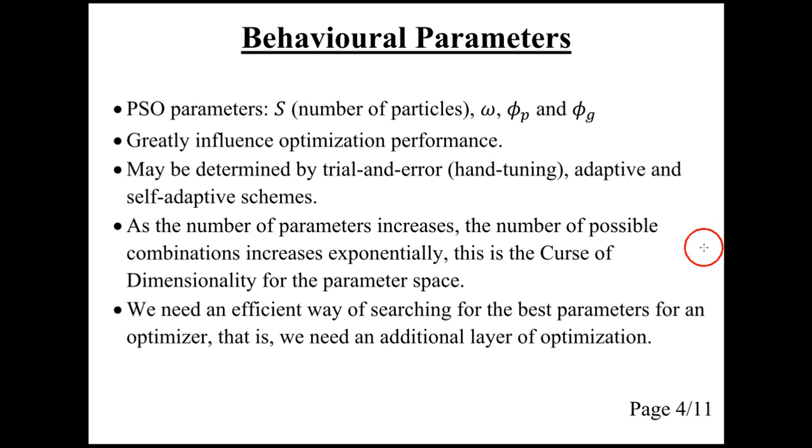A problem with an increasing number of parameters is that every time we add another parameter, we exponentially increase the number of parameter combinations. And this is known as the curse of dimensionality for the parameter space. So we need an efficient way of searching for good parameters.